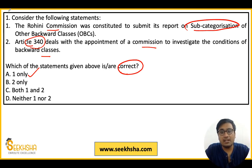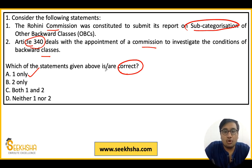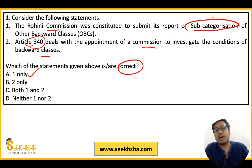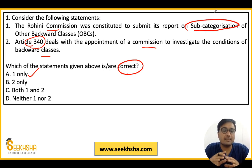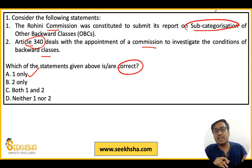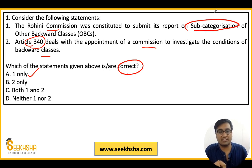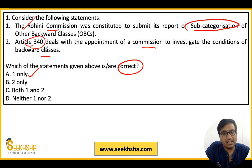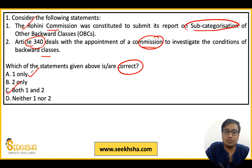Elimination can be a bit difficult in this case. You can tell me which statement is correct. The answer will be that the first statement is correct. What is sub-categorization? Basically, the backward classes and OBCs are not all economically and socially equal, so sub-categorization is done so that those who are more backward and don't have economic or social development can be more focused on. The first statement is correct — Rohini Commission was made. The second statement refers to Article 340, which states that a commission is appointed to investigate conditions of backward classes. So option C is correct, because both statements are correct.